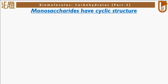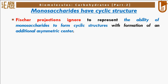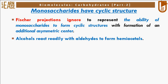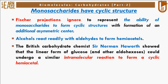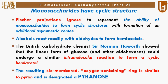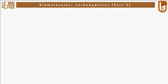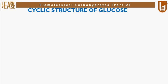Now let us understand how monosaccharides having 5 or 6 carbons exist in cyclic structures. Fischer projections ignore the ability of monosaccharides to form cyclic structures with formation of an additional asymmetric center. Alcohols react readily with aldehydes to form hemiacetals. The British carbohydrate chemist Sir Norman Haworth showed that the linear form of glucose and other aldohexoses could undergo a similar intramolecular reaction to form a cyclic hemiacetal. The resulting 6-membered oxygen-containing ring is similar to pyran and is designated a pyranose.